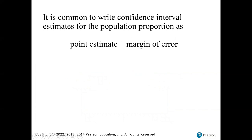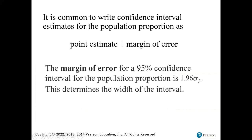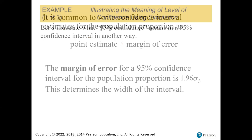It is common to write confidence interval estimates for the population proportion as the point estimate plus or minus the margin of error. The margin of error for a 95% confidence interval is 1.96 times our standard deviation — that determines the width of our interval. You add and subtract that from your point estimate.